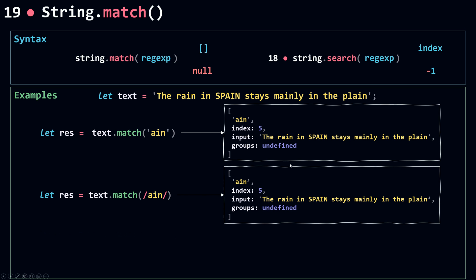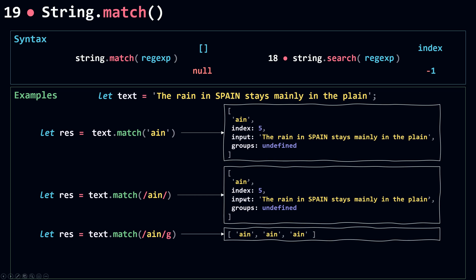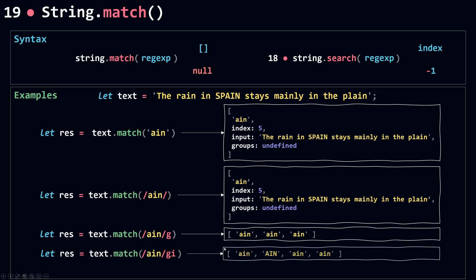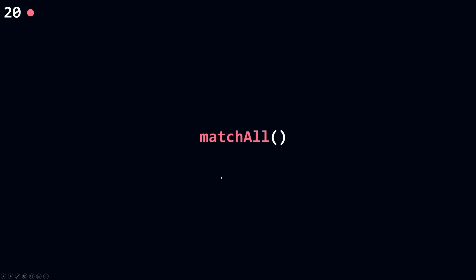If I call `match` with a global regular expression, I get all the matches but without the extra properties — index, input, and groups are not included. I just get the matches that occur in the string. Using the case-insensitive flag gives the same kind of result: an array of matches without those properties. And if I use a pattern that doesn't exist in the string, `match` returns null.